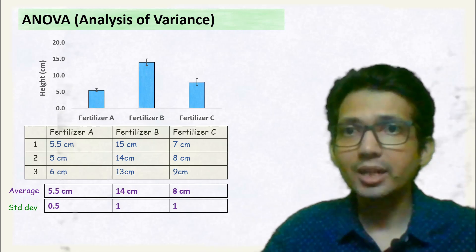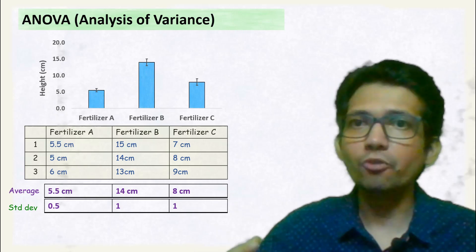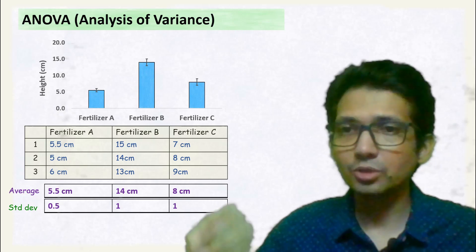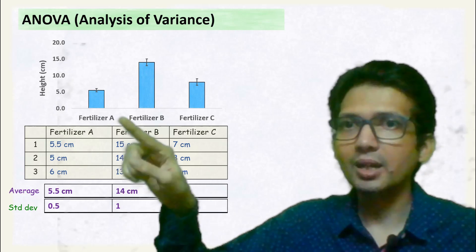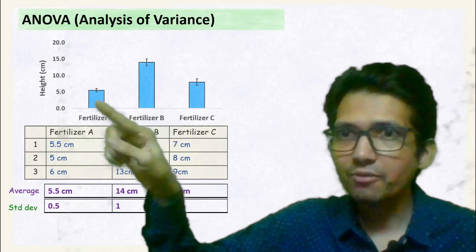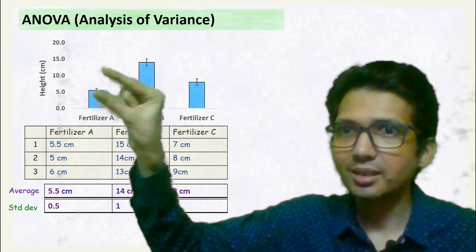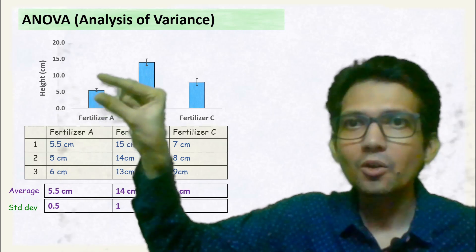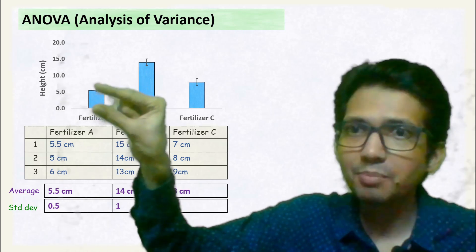These results can also be demonstrated in the form of a graph. The graph is plotted of the average value and the standard deviation, which is shown as the error bar.